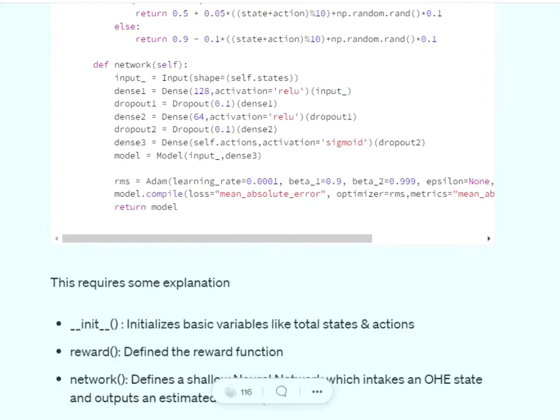The function network defines the neural network that will help us estimate the value function for each action. You can see three dense layers are present and the final dense layer has an activation sigmoid.